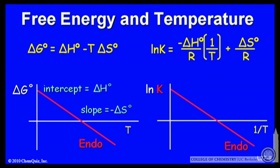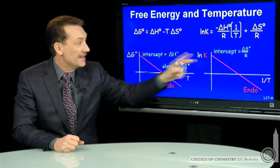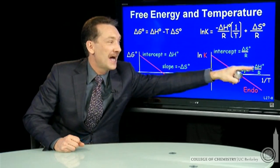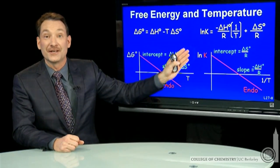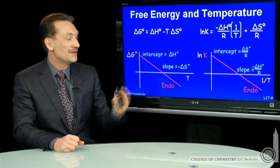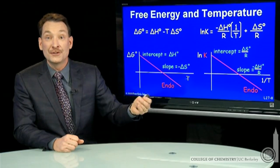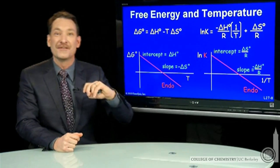If I plot natural log K versus 1 over T for an endothermic reaction, now the intercept and slope kind of reverse their roles. The slope is determined by delta H and the intercept by delta S. So the intercept is delta S over R, and the slope is determined by the opposite of delta H. So for an endothermic reaction, that's a positive delta H, you get a negative slope. Plots of delta G versus temperature and ln K versus 1 over T can be used to determine thermodynamic variables like the entropy and enthalpy of the chemical reaction.